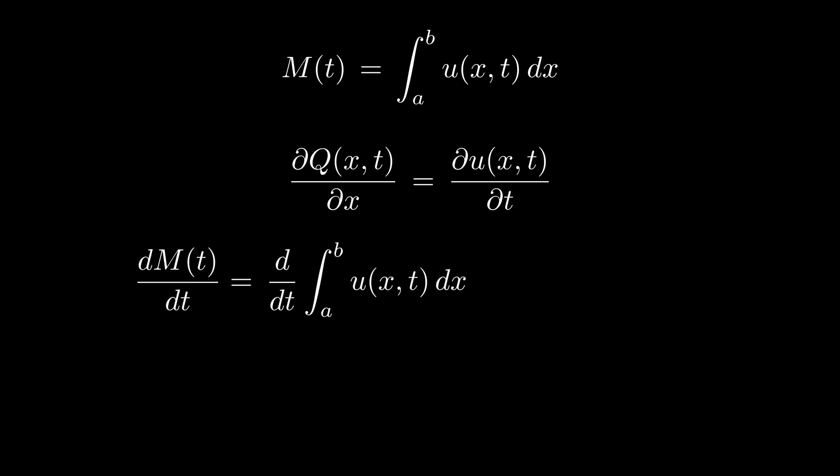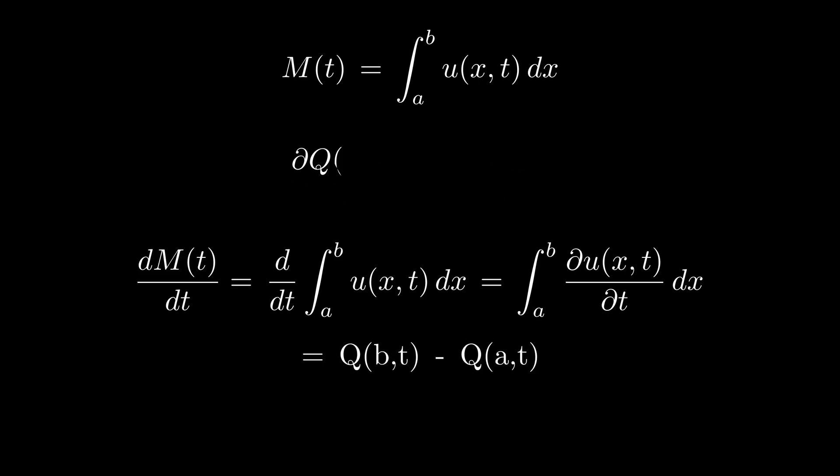For smooth functions, that is, functions without any sudden fluctuations, the derivative and integral sign can be interchanged. Wait a second, we have seen this quantity just now. Therefore, the integral is equal to the difference of flux at the endpoints. This is a principle of mass conservation. The rate of change of mass is simply the difference of flux at the endpoints.